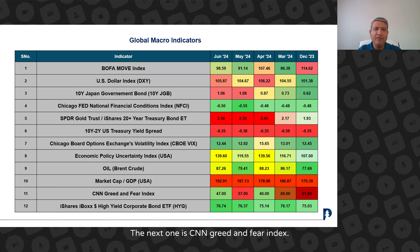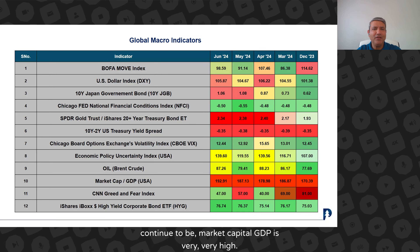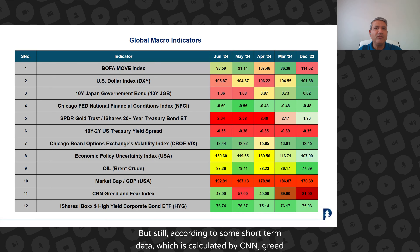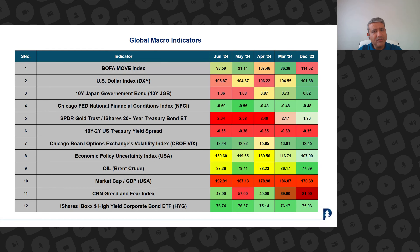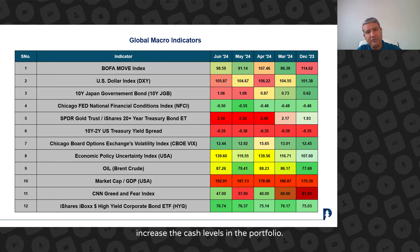The next one is the CNN Greed and Fear Index. Green means the market is fearful. A fearful market normally means it's a good time to buy. So I'm giving you a contradiction here — although US markets continue to have a very high market cap to GDP, which is in an overvalued and concerning category, according to some short-term data calculated by CNN, the greed and fear index continues to show fear. That means more and more investors are actually fearful of the market rather than being greedy. When this ratio goes towards 70 and 80, that's when it is a good time to increase cash levels in the portfolio.